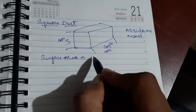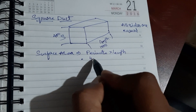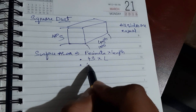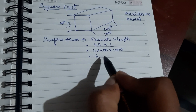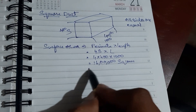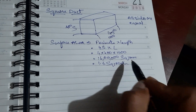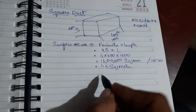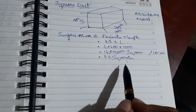Surface area equals perimeter into length. The perimeter of a square is 4s, so: 4 × 400 × 1000 = 1,600,000 square mm. To convert to square meters, divide by 1,000,000. We get 1.6 square meters as the surface area of the square duct.